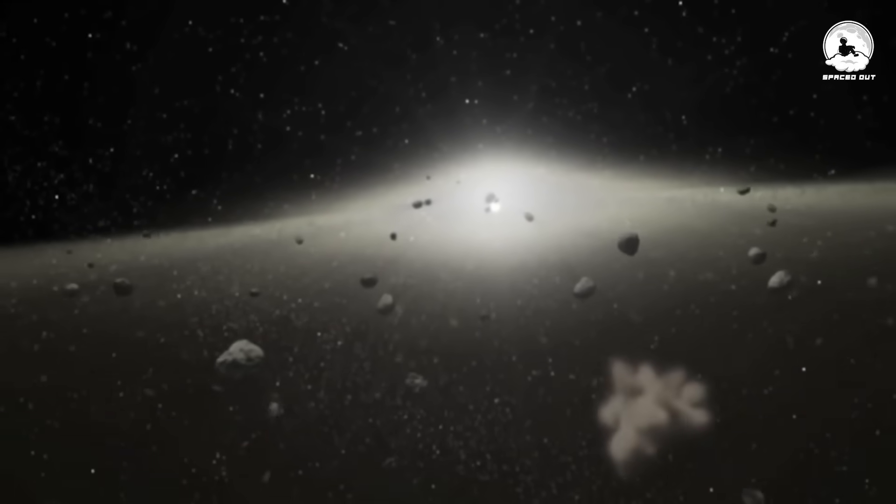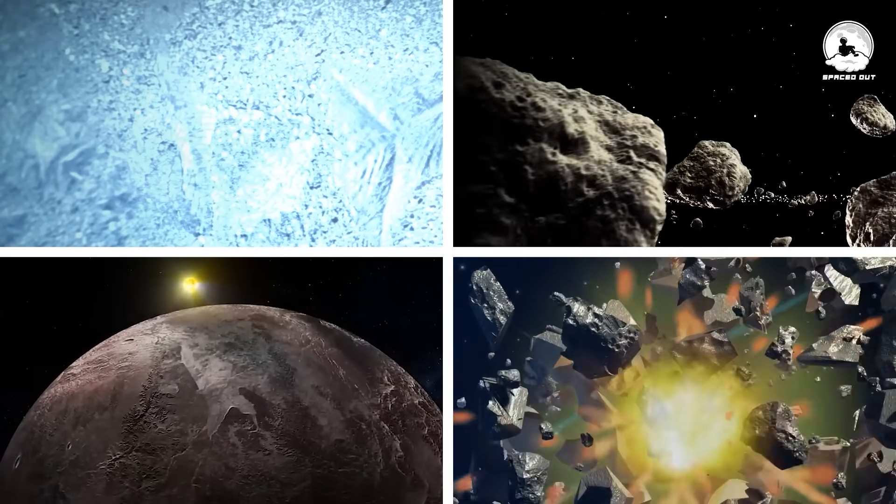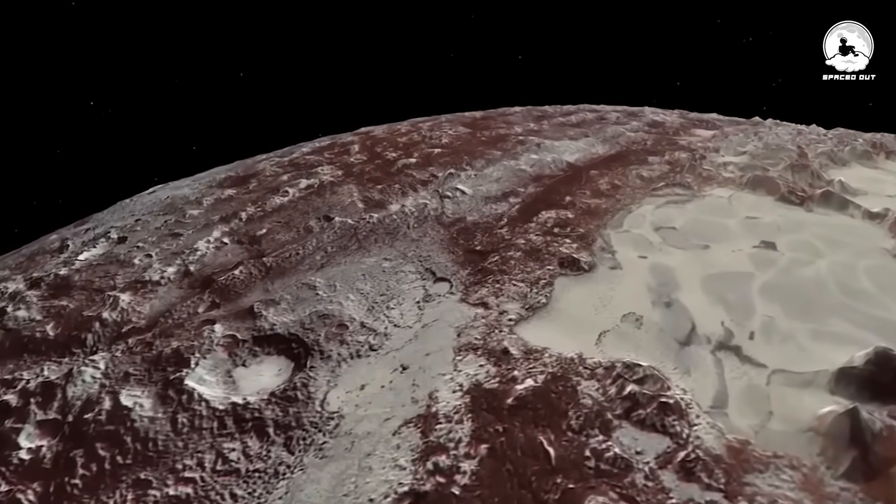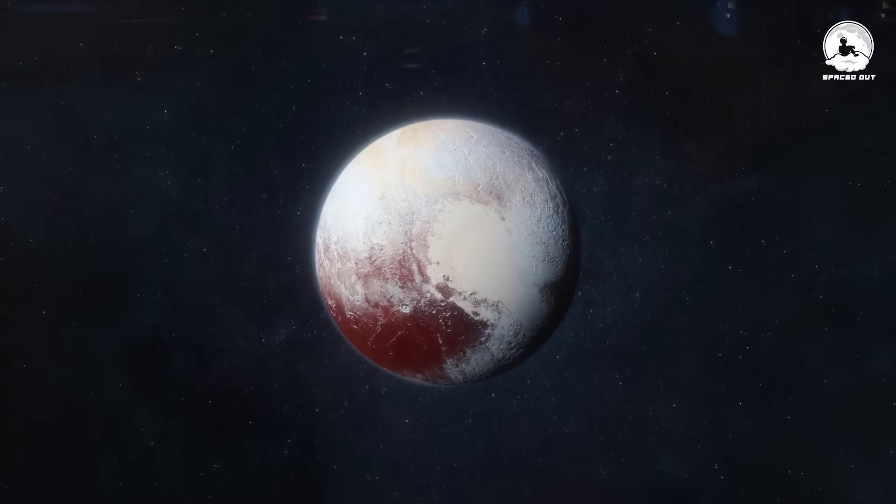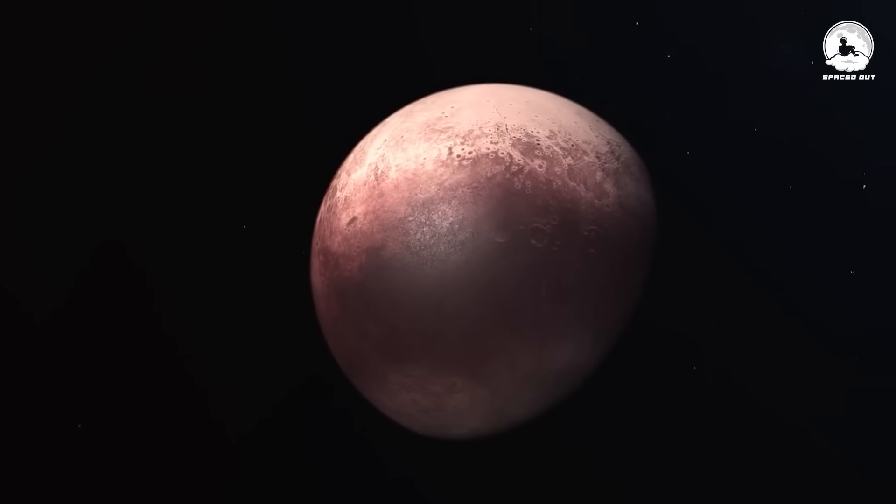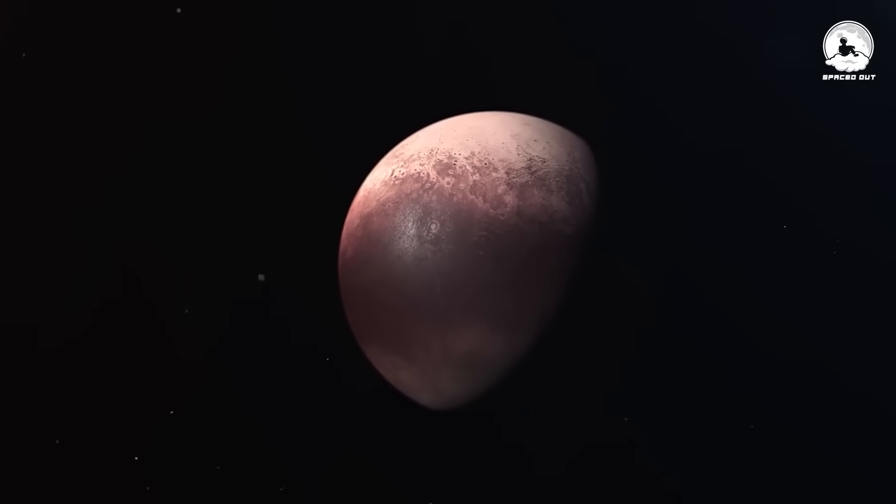The constituents of the Kuiper Belt include ice, rocks, comets, and dwarf planets. Pluto, which was formerly known as a planet and a part of the solar system, was demoted to a dwarf planet after being discovered to have shared orbit with other dwarf planets and constituents of the Kuiper Belt.